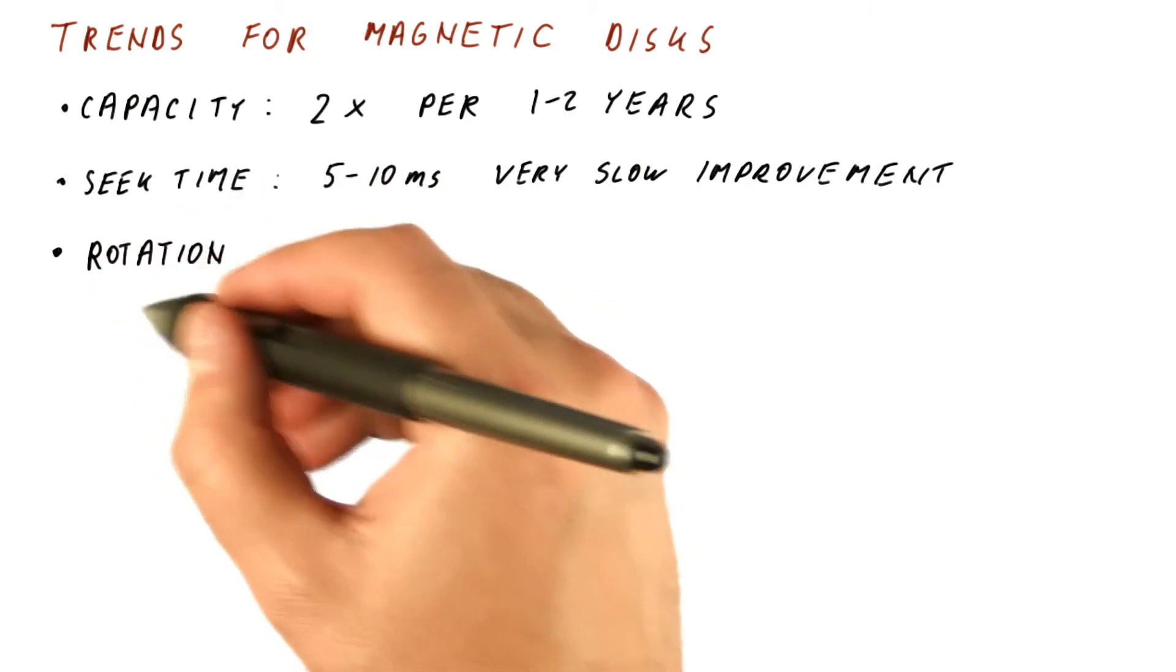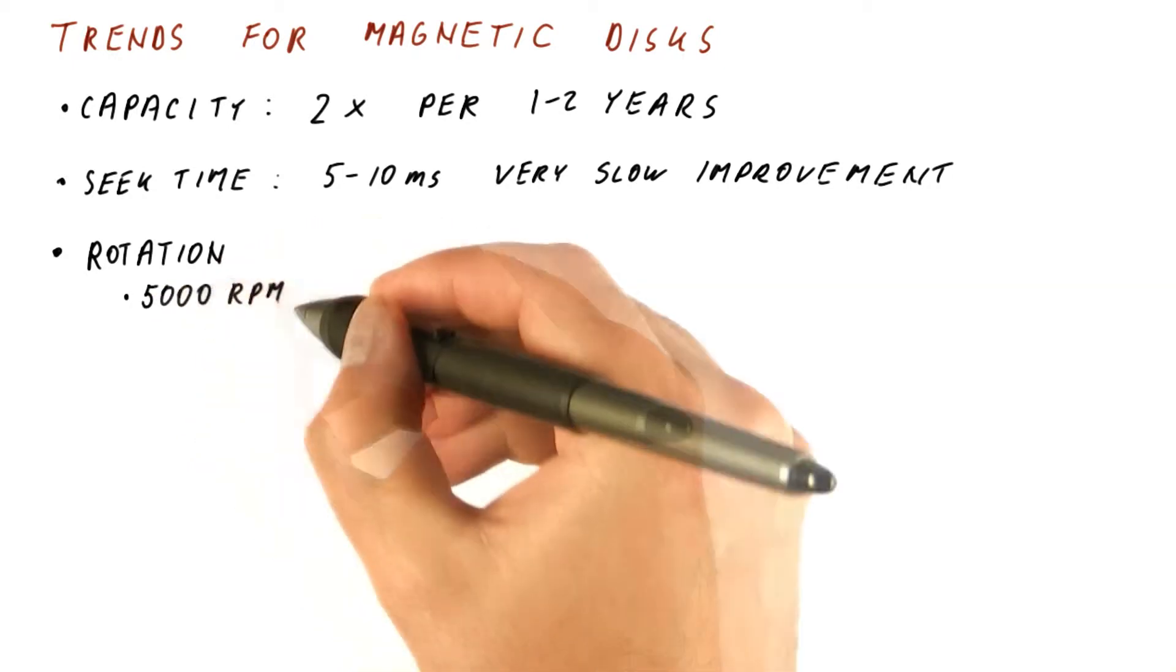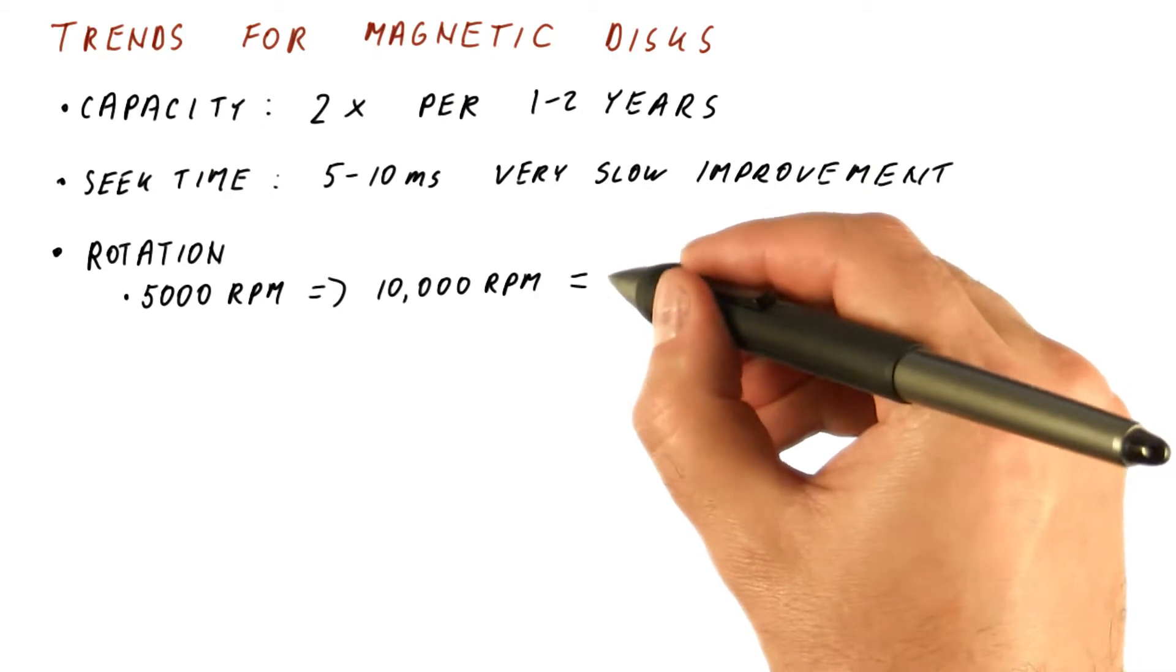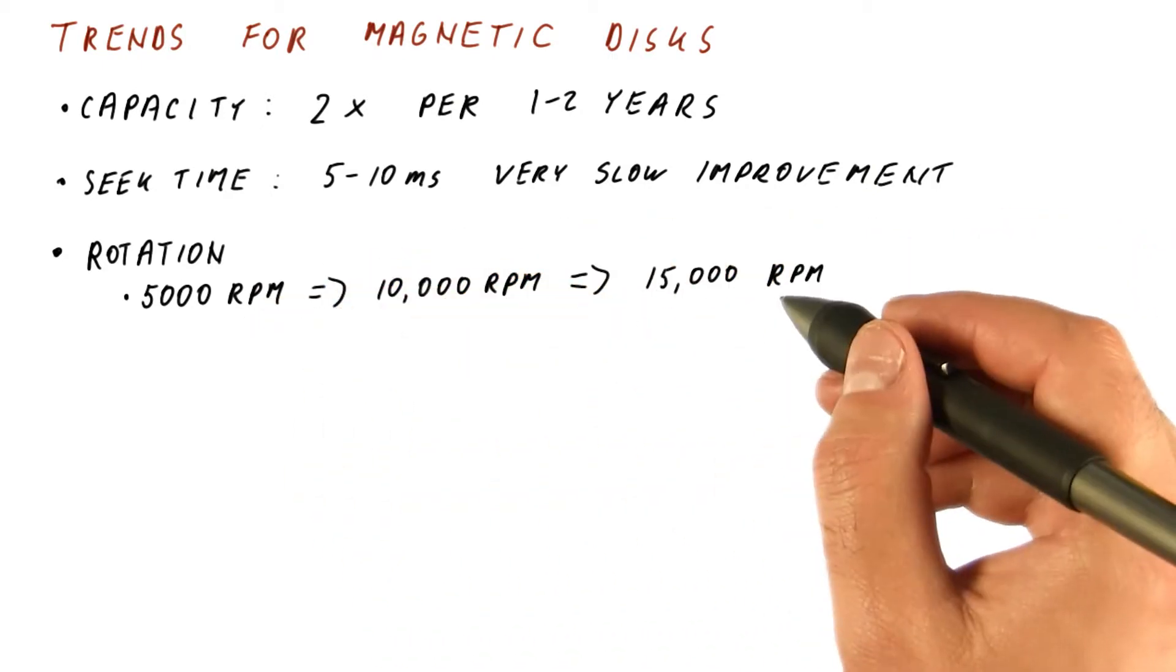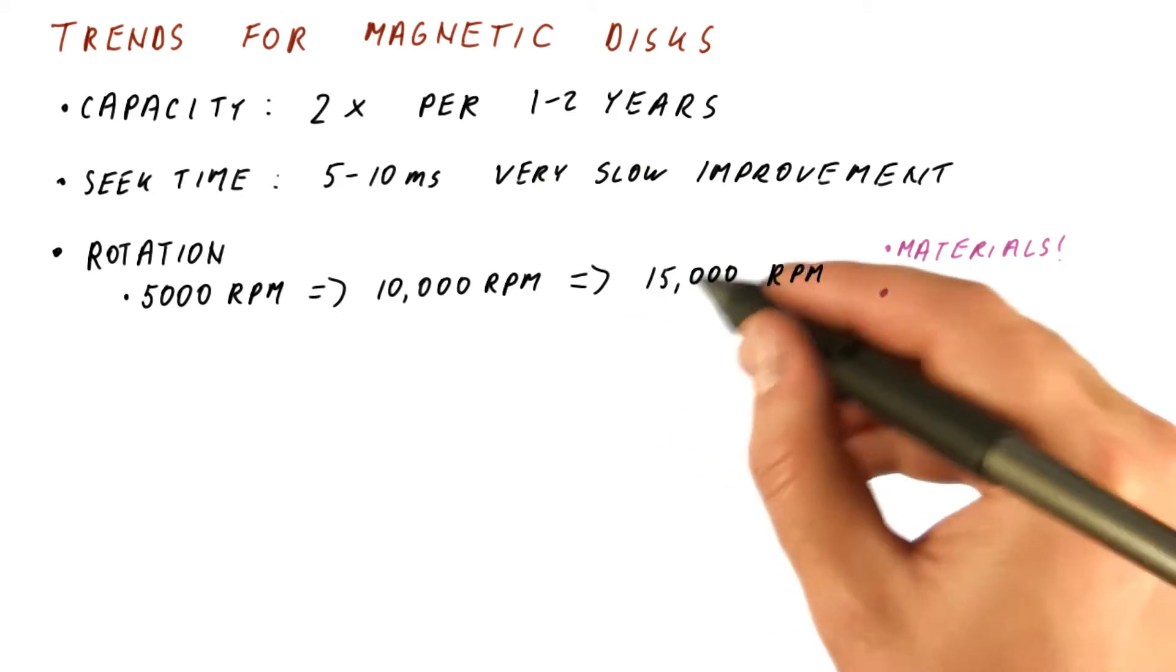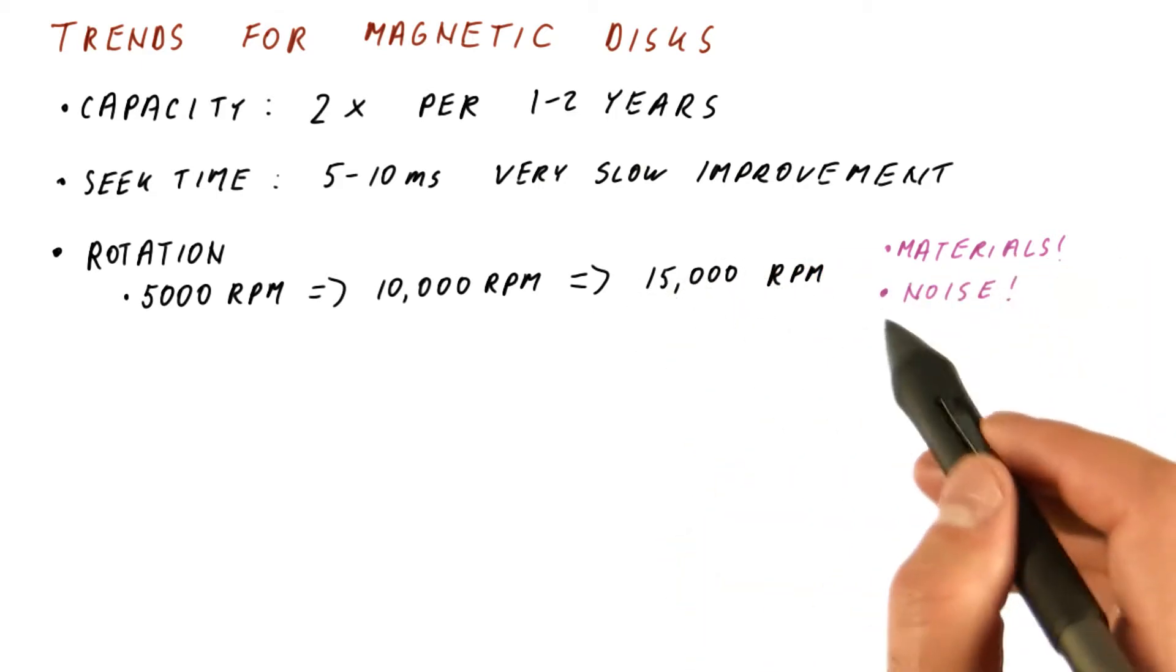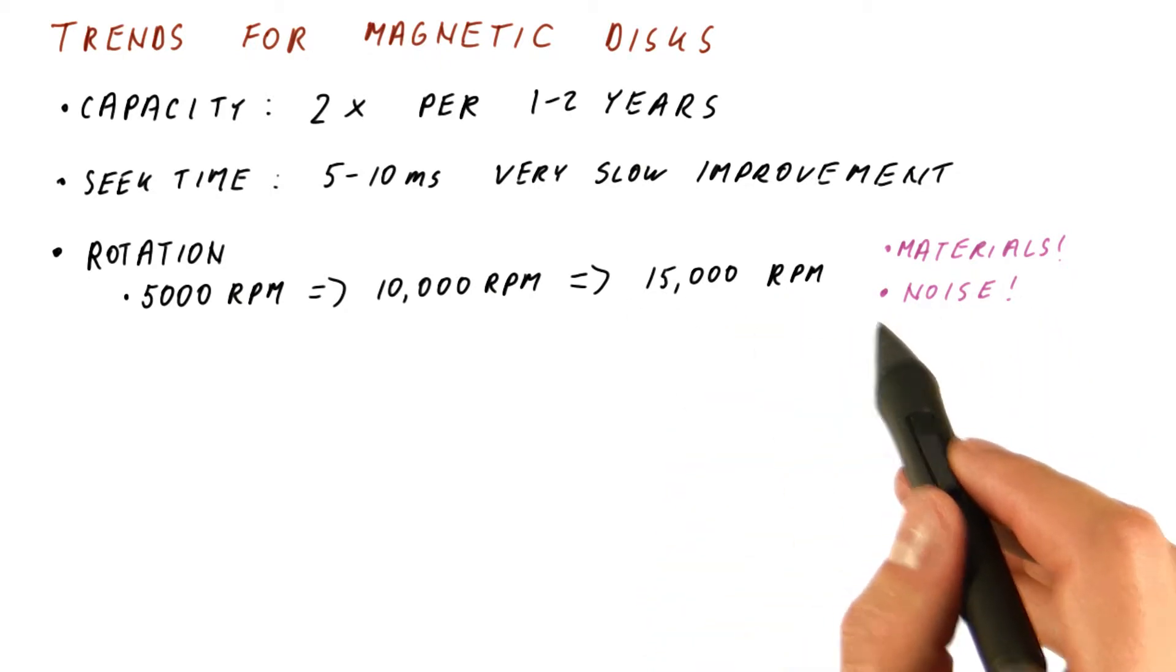The speed of rotation for disks has actually been improving. It went from 5,000 rotations per minute to 10,000 rotations per minute, and even beyond that. So that part of the magnetic disk speed has been improving. This type of improvement requires improvement in what material the platter is built out of. Another factor that has been affecting this is the noise. Disks that rotate faster tend to be both noisier and also create a higher pitch sound, which is less pleasant for people.